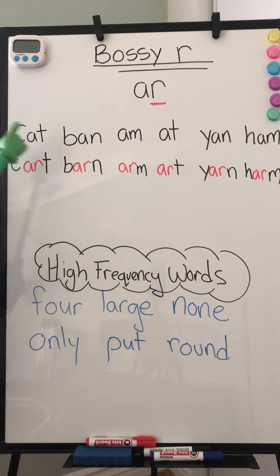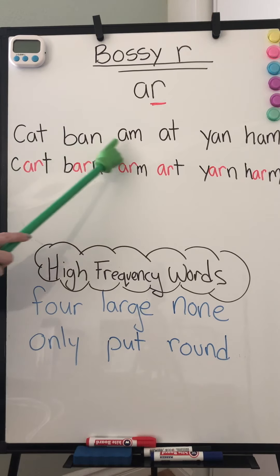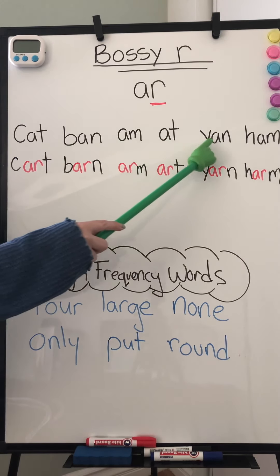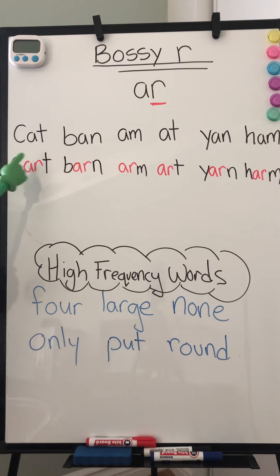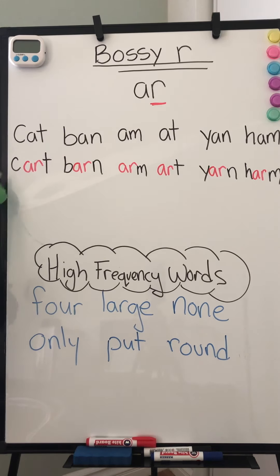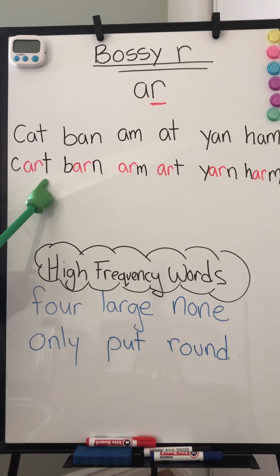So the A makes a sound — it sounds like 'ah.' But when that bossy R comes in, that A has to stay quiet because that bossy R likes to do all the talking. So look, I have cat, but if I put an R in there, I don't hear the A anymore. I only hear R.